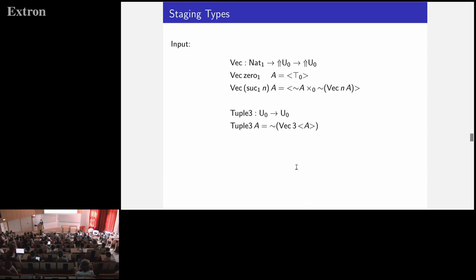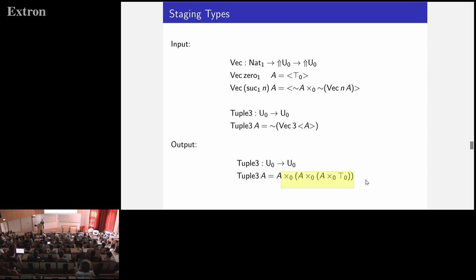We can also compute types by staging. Given a meta-level natural number and a computation returning an object-level type, we do recursion on the meta-level natural number: if zero, return a quotation of the unit type; if successor, return a quotation of a pair of the splice of A and the splice of the recursive call. Using pattern-matching notation, a definition of tuple3 is just the specialization to three, fully in the object language, and staging computes it to the appropriate output type.